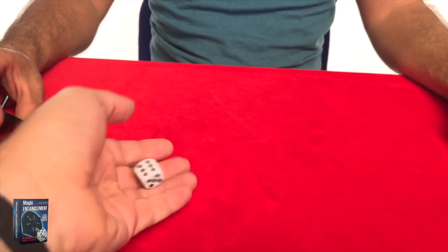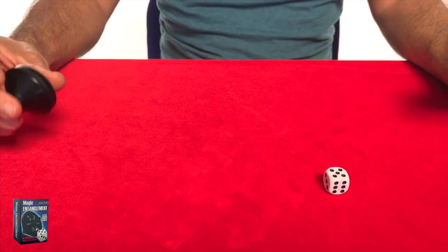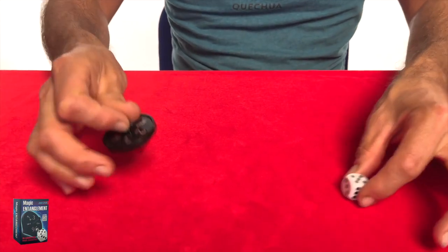Roll the die to select a number. Five. Do you like five? Yes. Sure you don't want to change it? Yes. Perfect.